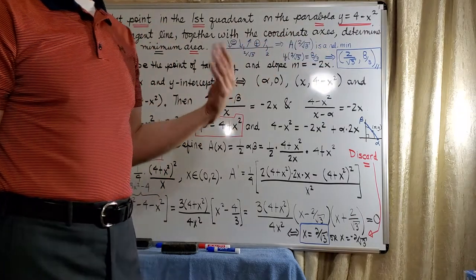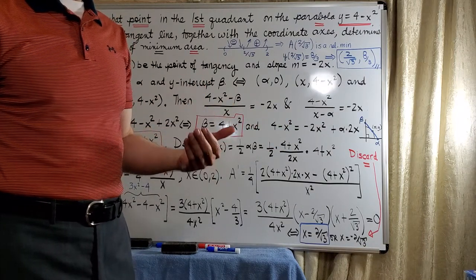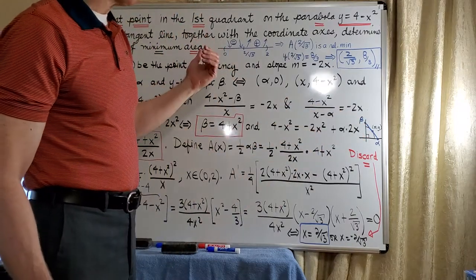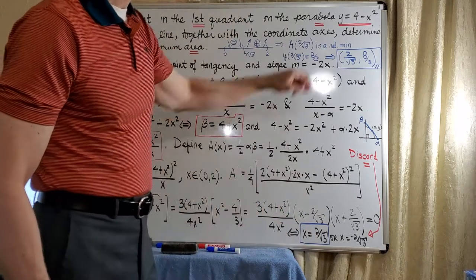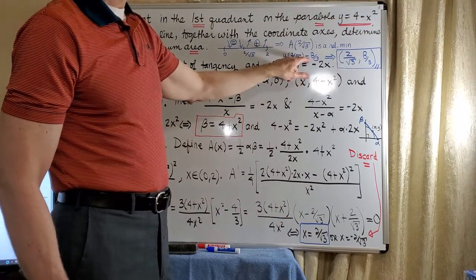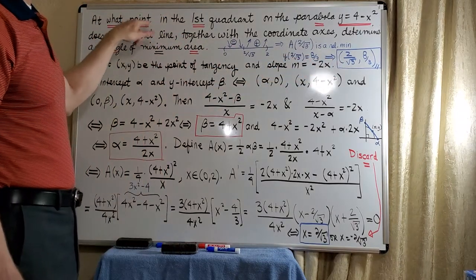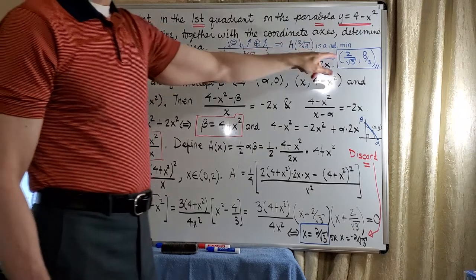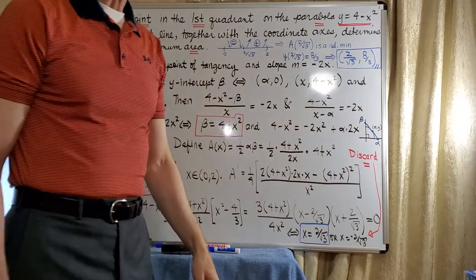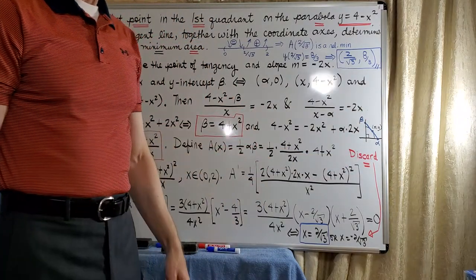Now the problem doesn't ask us to find the actual minimal area, but it does ask us to find the actual point of tangency here where it occurs. We have the x value, which is 2/√3, and then we can just substitute that in here to find y, and you'll easily see that that's 8/3. And so now, as we look up here, it says, at what point? Here's our point. At this point, the tangent line, together with the coordinate axes, will create a triangle of minimal area. And we are done.